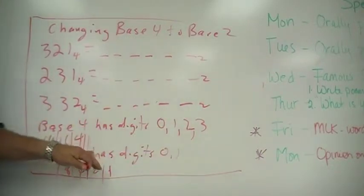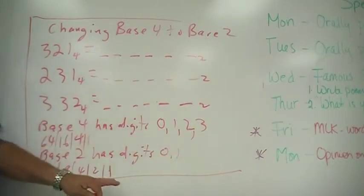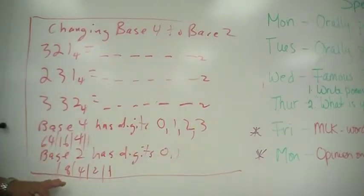And the places is 1's, 4's, 16, 64. Base 2, digits 0 and 1, 1's, 2's, 4's, and 8's, and so on.